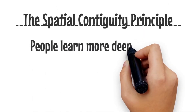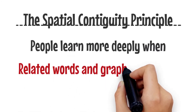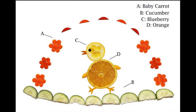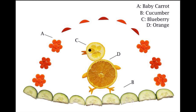The spatial contiguity principle: people learn more deeply when the printed words and graphics are presented near rather than far from each other on the page or screen. Obviously, it is a bad example — if we want to know what the ingredient of the flower is, we need to look it up. It will definitely waste our time because the words are not near the pictures. Now let's see the good example.